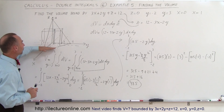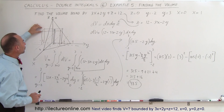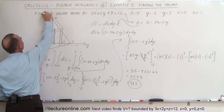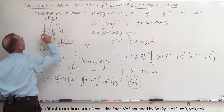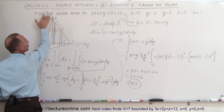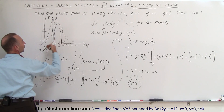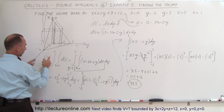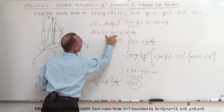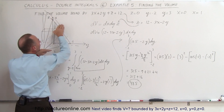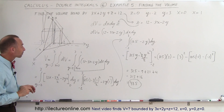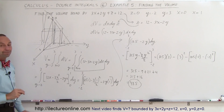This was not a bad problem, but the hard part was visualizing what the region looks like. The DV volume element goes right up to the plane. The x limits are from 0 to 1, the y limits from negative 2 to 3. We find DV by taking the area of the base times the height, where the height is the z portion of the plane expressed in terms of x and y. That gives us two integrals over x and y, and that's how we do it. Thank you.